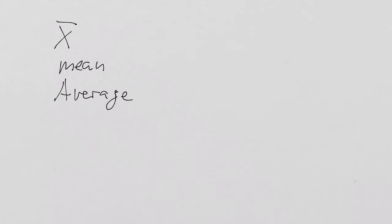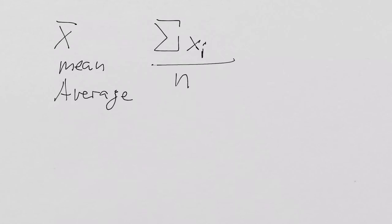We can very easily calculate it — everybody knows how to calculate the average. We just simply sum up — that's the symbol for sum — our individual x_i, our individual weights, and divide it by the number of observations that we have.